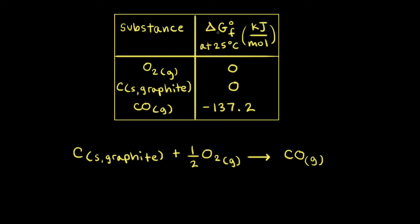Textbooks often tabulate data for standard change in free energy of formation of substances at 25 degrees Celsius, though it doesn't have to be that temperature. The units are in kilojoules per mole. The standard change in free energy of formation for an element is equal to zero. Therefore, for elemental oxygen O2, delta G naught is equal to zero, and for carbon in the solid state in the form of graphite, delta G naught is also equal to zero.